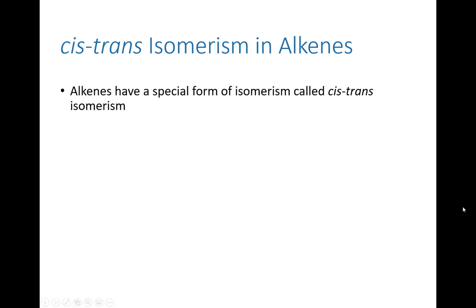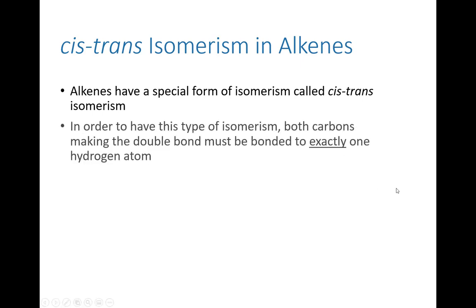This form of isomerism is peculiar to alkenes. We also have a form of cis-trans isomerism with cycloalkanes, although we're not going to get into it in this chapter — we will look at it when we get to carbohydrates. To have cis-trans isomerism, both of the carbon atoms in a double bond have to be bonded to exactly one hydrogen atom. They can't both have zero, they can't both have two; they both need to have exactly one hydrogen atom.